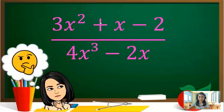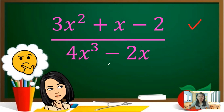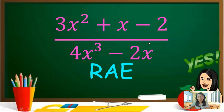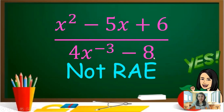Another example — look alone at the numerator and denominator. The numerator has no broken rule, it is considered a polynomial. The denominator has no broken rule either — it is considered a polynomial. The denominator is not zero, so it satisfies rule number 1 of RAE. It is still a rational algebraic expression. Another example — this is considered not RAE because it breaks the rule of polynomial where the exponent should not be negative. So it is considered not RAE.